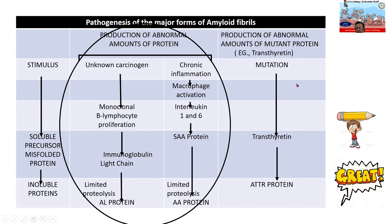There are other types of amyloid that can happen because of mutation. There is a product called transthyretin, producing ATTR protein — amyloid transthyretin protein. So the stimulus can be a carcinogen, mutation, or chronic inflammation. The misfolded proteins are SAA protein or transthyretin, and the final insoluble products are AL, AA, or ATTR protein. The pathogenesis of amyloidosis is a key question — please draw this tabular column.